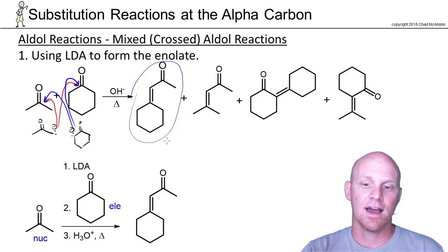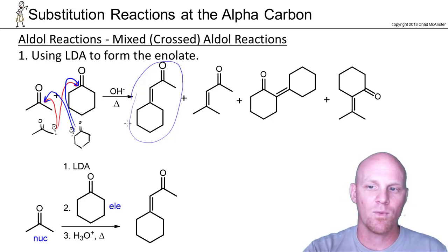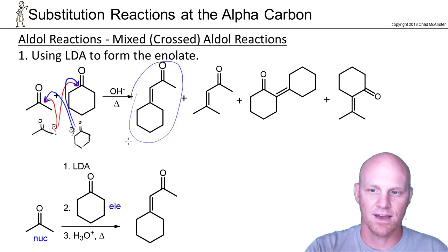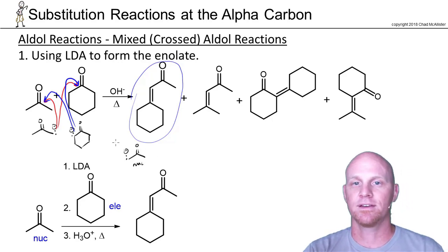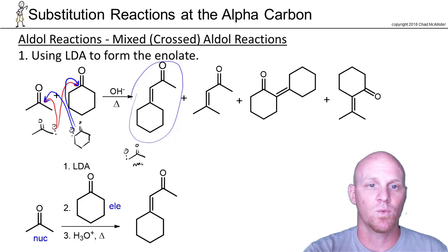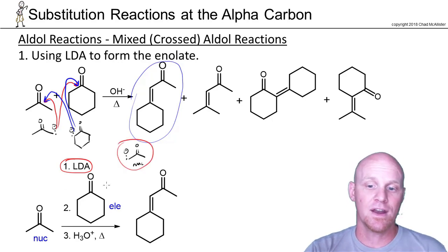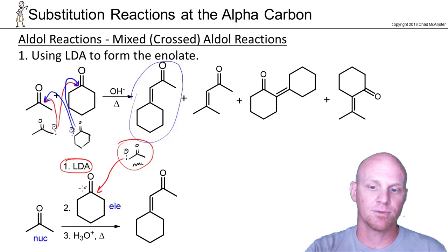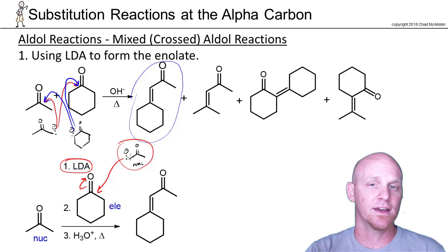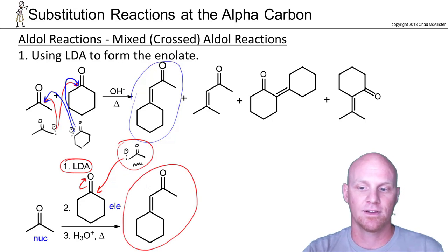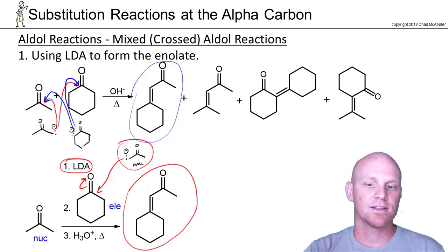The first way to solve this is to simply use LDA. LDA can solve all your problems. If I want a specific product where acetone is definitely the nucleophile, I start with acetone and add LDA to just the acetone — that way the only possible enolate that can form is acetone's enolate. Then I add cyclohexanone, so it's the only possible electrophile. We get 100% conversion of acetone into enolate, cyclohexanone exists only as the electrophile, and we get one product. LDA lets you choose which molecule gets to be the enolate and the nucleophile.